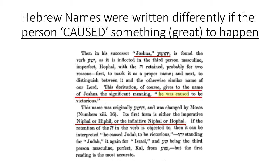I'll end here with the word Joshua. Joshua sounds a little like the word Yeshua, which is what Hebrews call the Messiah. From an 1871 book, they show that Joshua had a different verb form — the hiphil form meaning 'he caused to be victorious.' His name was originally more like Yeshua, but Moses changed it, adding this hiphil form, to reflect that Joshua caused them to be victorious — he caused Judah to be victorious. So Joshua's name was respelled to reflect the victory he caused by delivering the people.